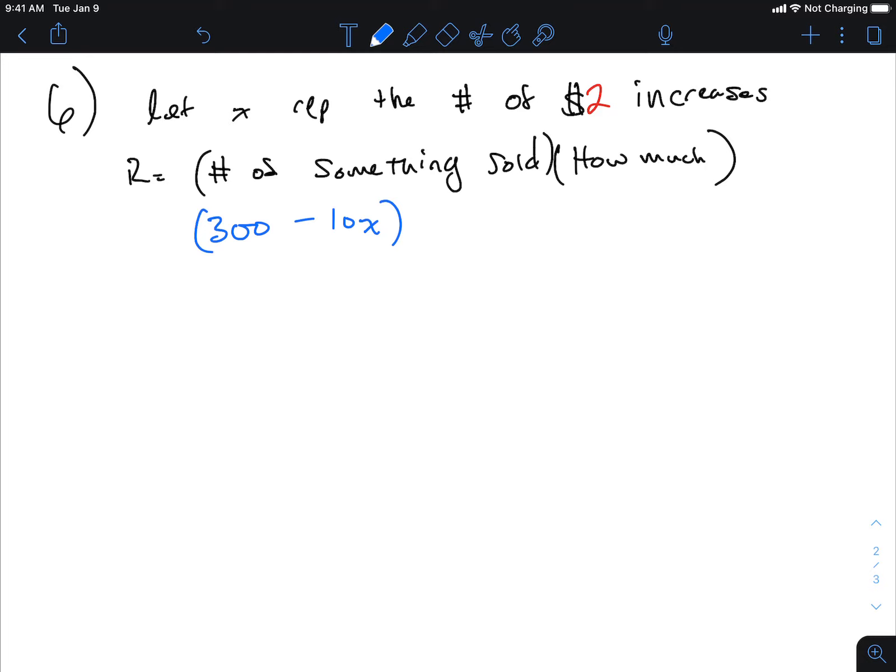300. What happens when I increase the price? We lose 10 fewer customers, minus 10x. How much? $36 per person. What happens? We increase it by $2 times x. Magic, every single time. This is what you do every single time. At the very least I should see these two things on your test for two marks.